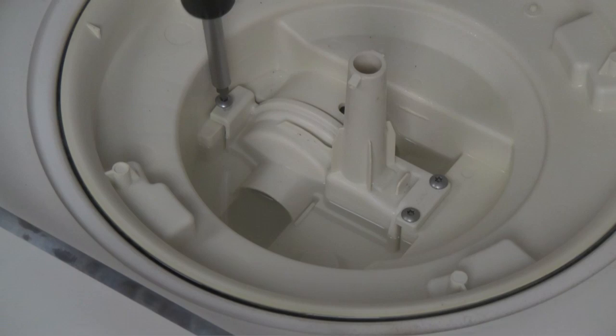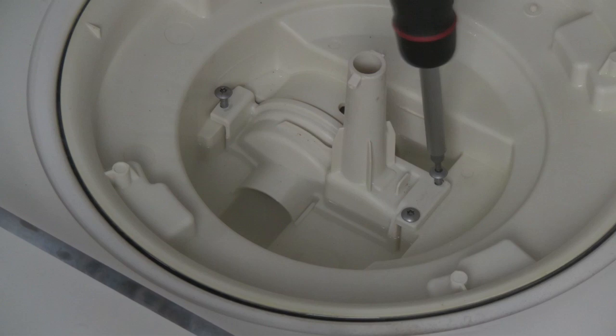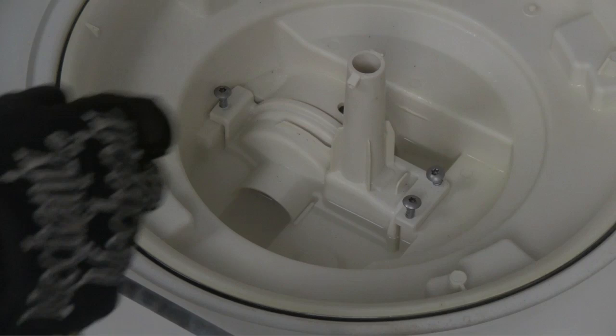Now we get to the good stuff. Three screws are all that hold this diverter cover in place, which directs the water from the wash pump motor to the upper and lower spray arms. After that's off, we can look for anything that may have worked its way down there and could be causing a sound like this.